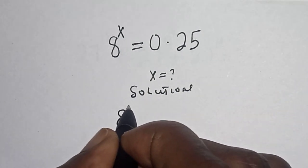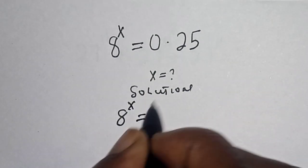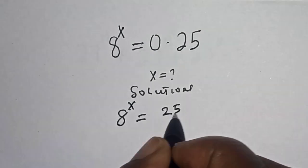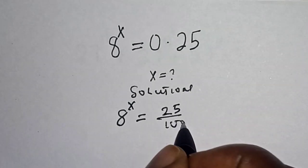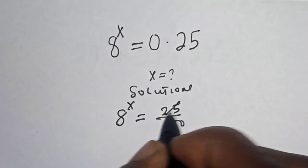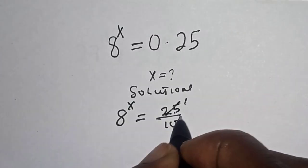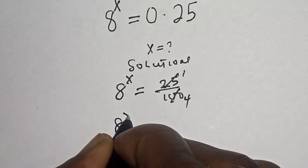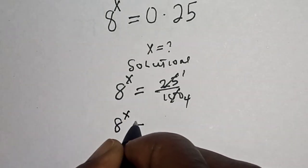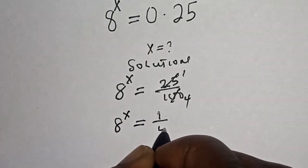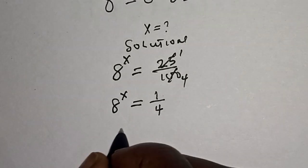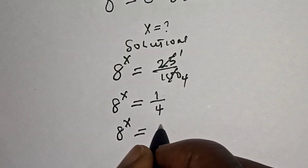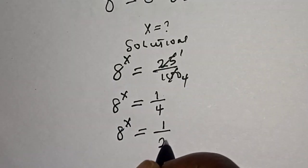We rewrite 0.25 as 25 divided by 100, which simplifies to 1 over 4. So 8 raised to power s is equal to 1 over 4, and further, 8 raised to power s is equal to 1 over 2 squared.